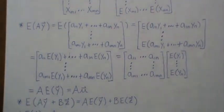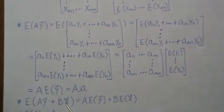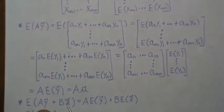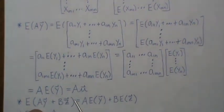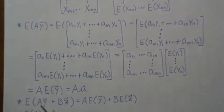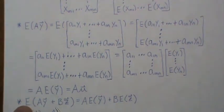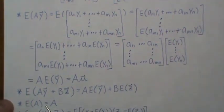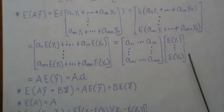The expected value of a·y plus b·z — where the dimensions are compatible — follows from linearity: we split it into the expected value of ay plus the expected value of bz. Since a and b are constants, they come out front, giving us a·E[y] + b·E[z]. Also, the expected value of a constant is always just that constant.